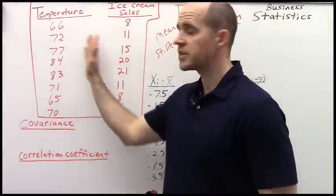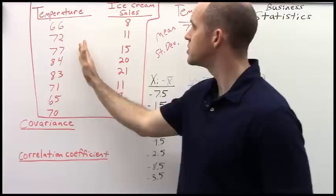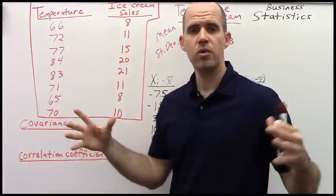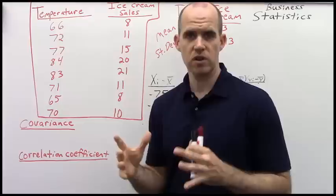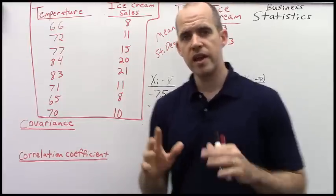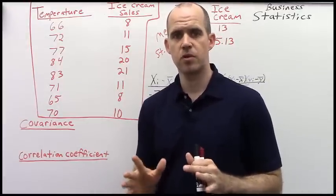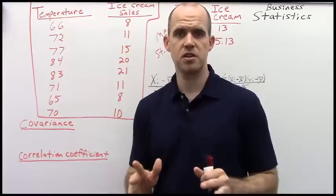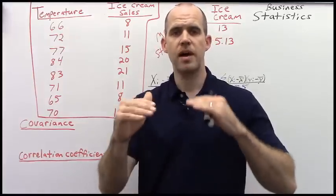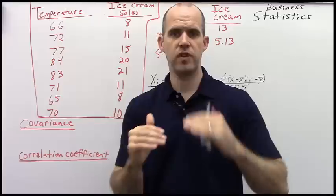So I've got two variables here. I've got the temperature and I've got ice cream sales. And now I want to look at how these two relate to one another. Now in statistics, when we talk about relationship or association or correlation, we're talking about how two things move in tandem.